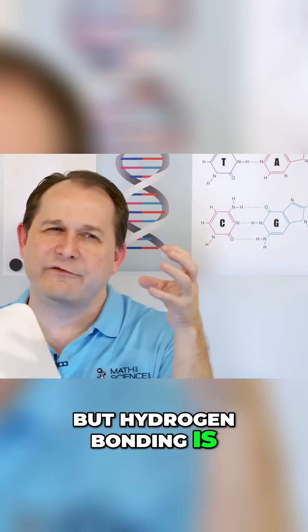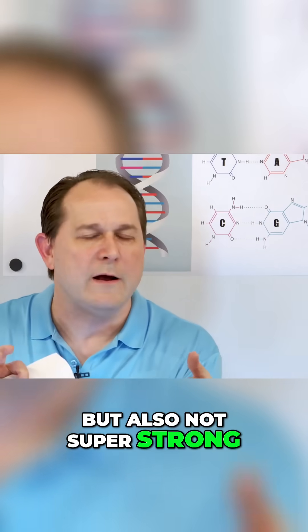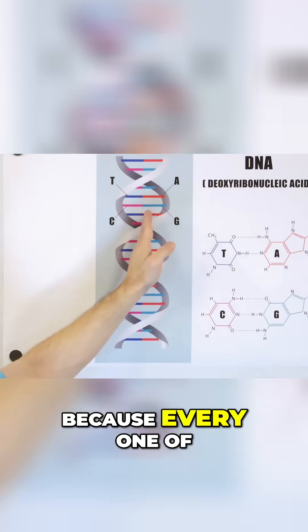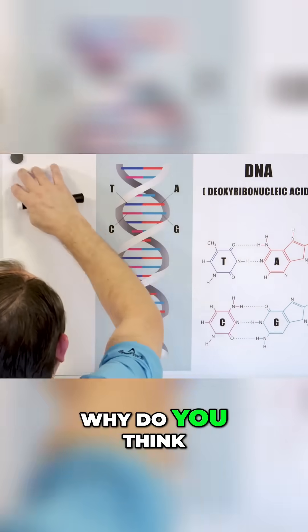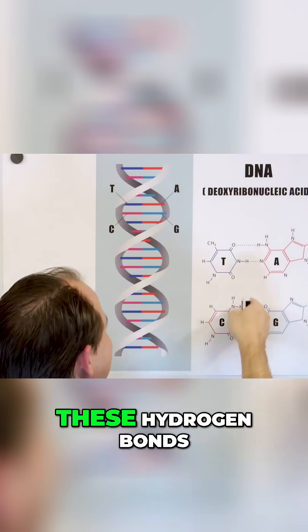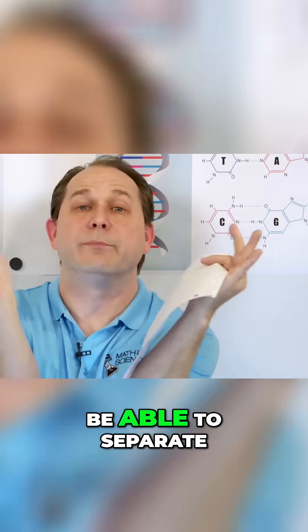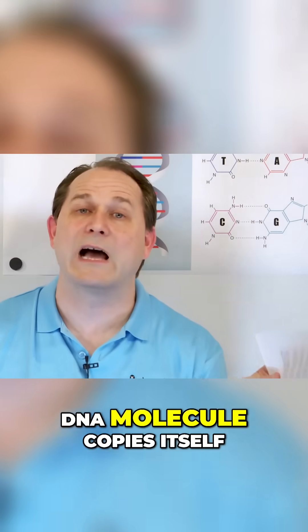But hydrogen bonding is just strong enough to keep it bonded but also not super strong. Why do you think a DNA molecule right down the middle, because every one of these connection points functions as a zipper? Why do you think it's important that these bonds, these hydrogen bonds, are not that strong? Well, because DNA needs to be able to separate. That's how the cells multiply and how the DNA molecule copies itself.